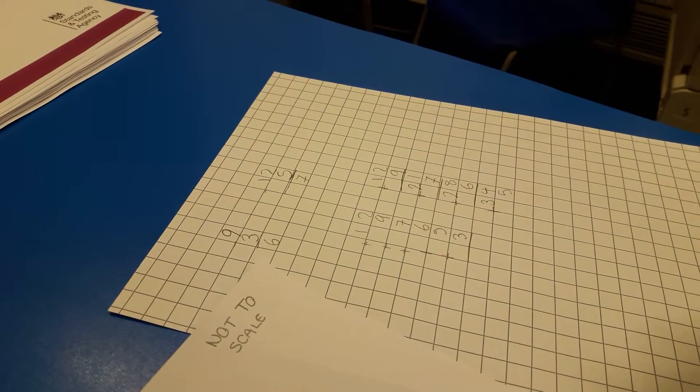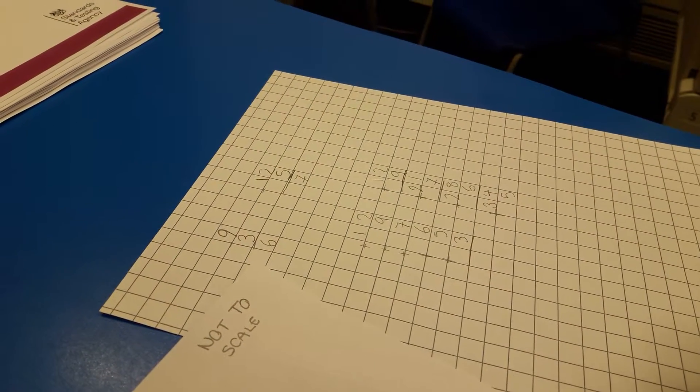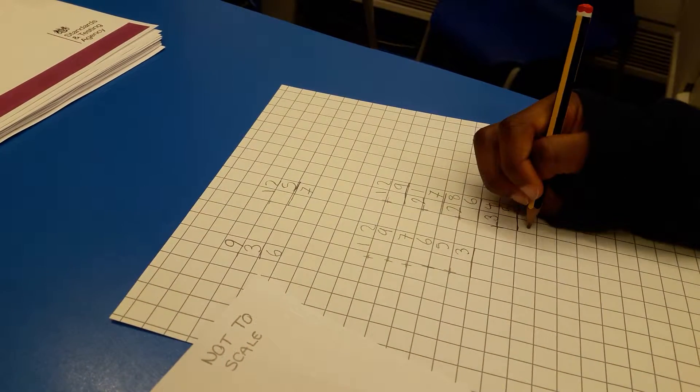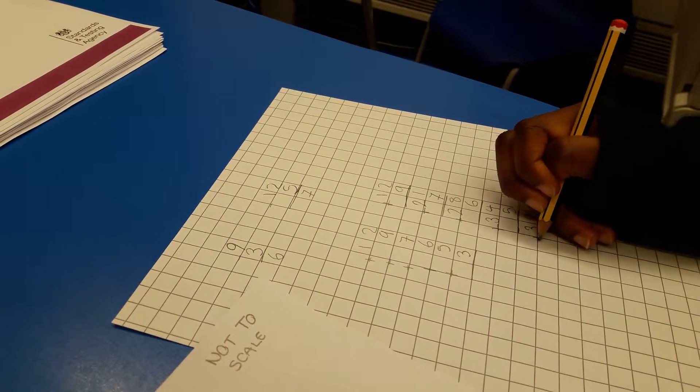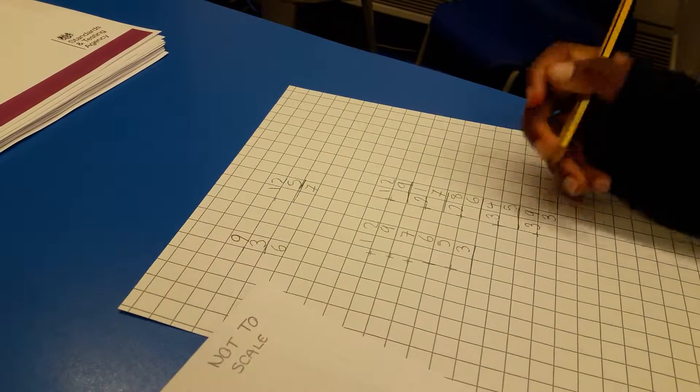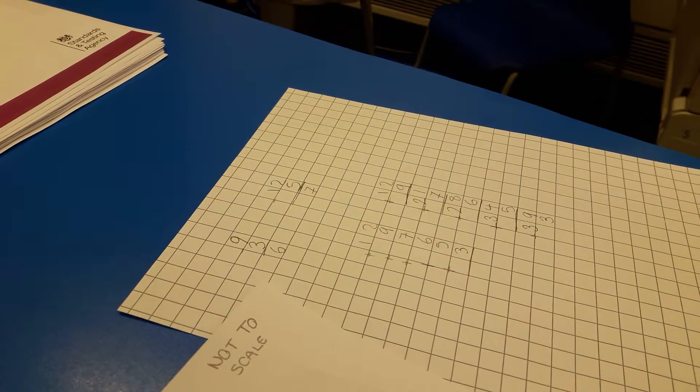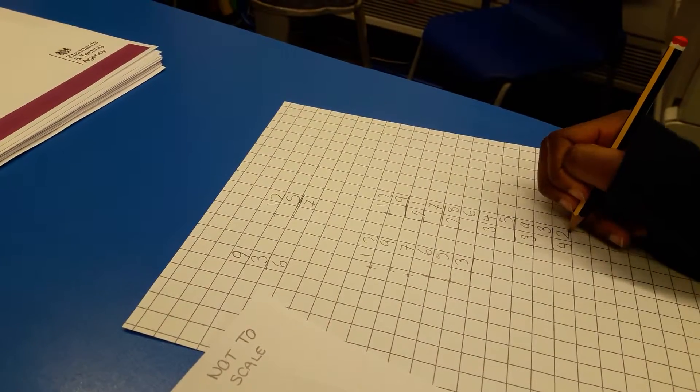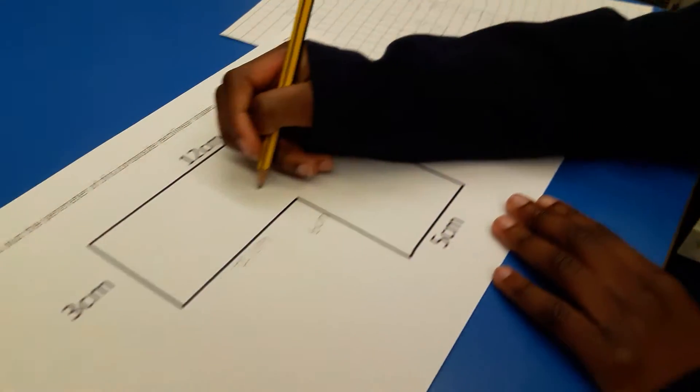Thirty-five, thirty-six, thirty-seven, thirty-eight, thirty-nine. And then thirty-nine plus three: forty, forty-one, forty-two. So your perimeter will be forty-two centimeters.